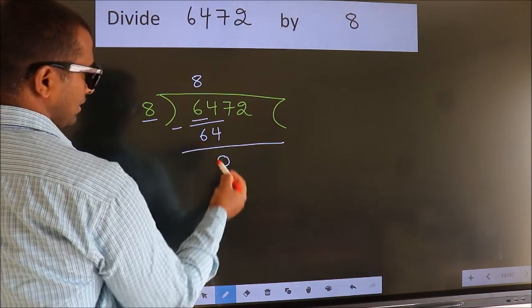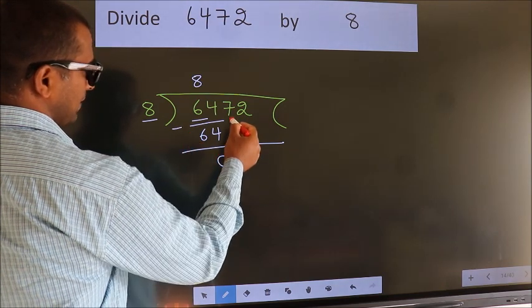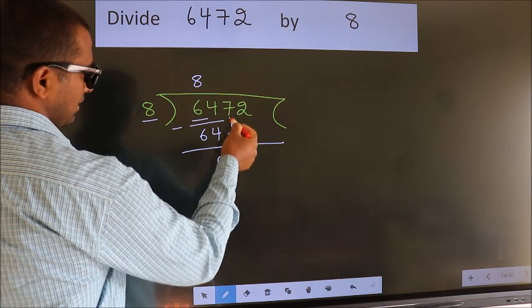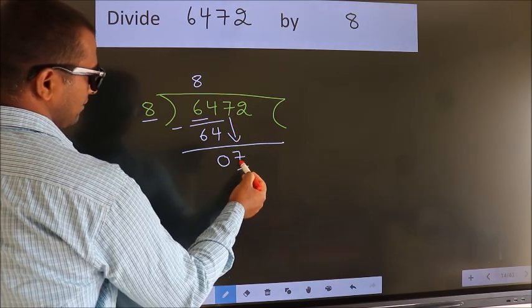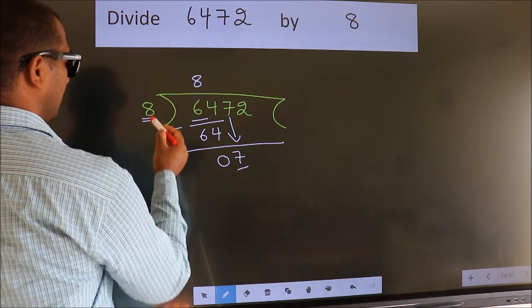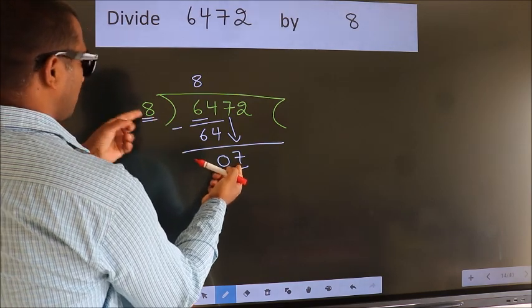We get 0. After this, bring down the next number. So, 7 down. Here we have 7, here 8. 7 is smaller than 8.